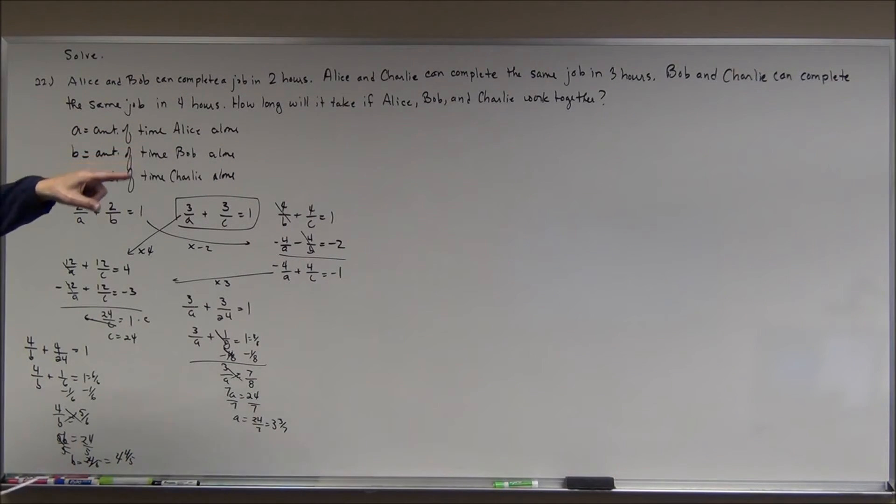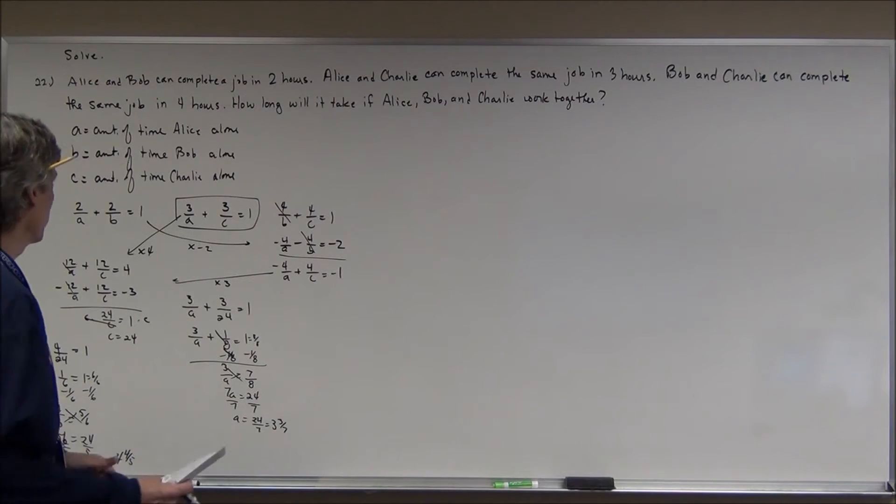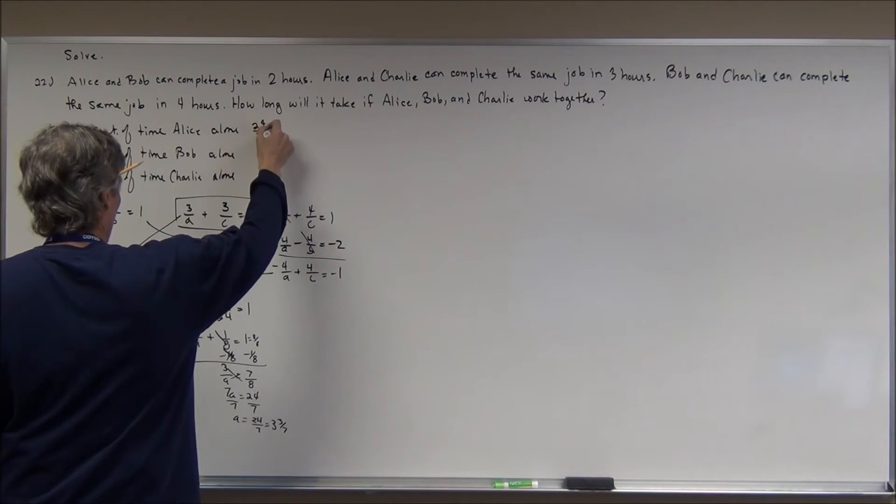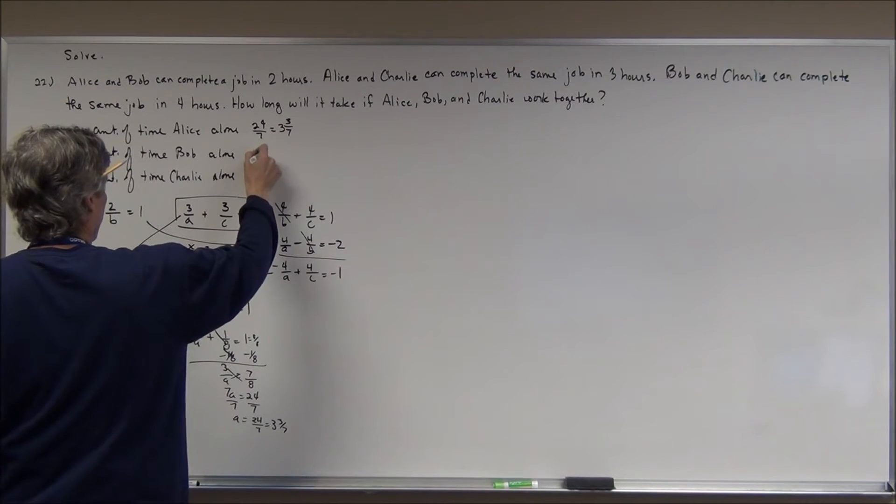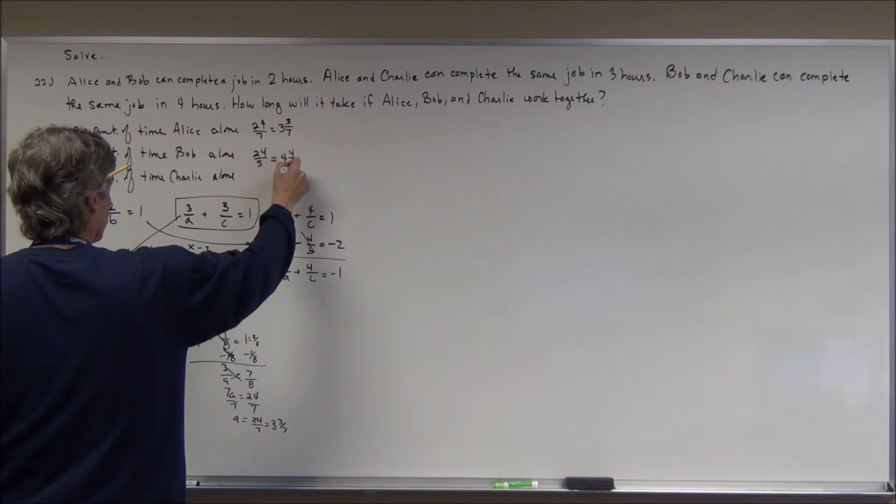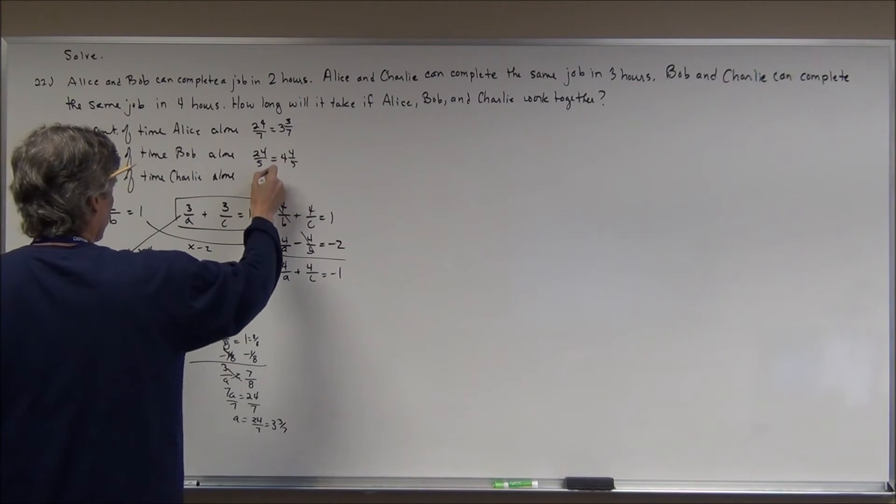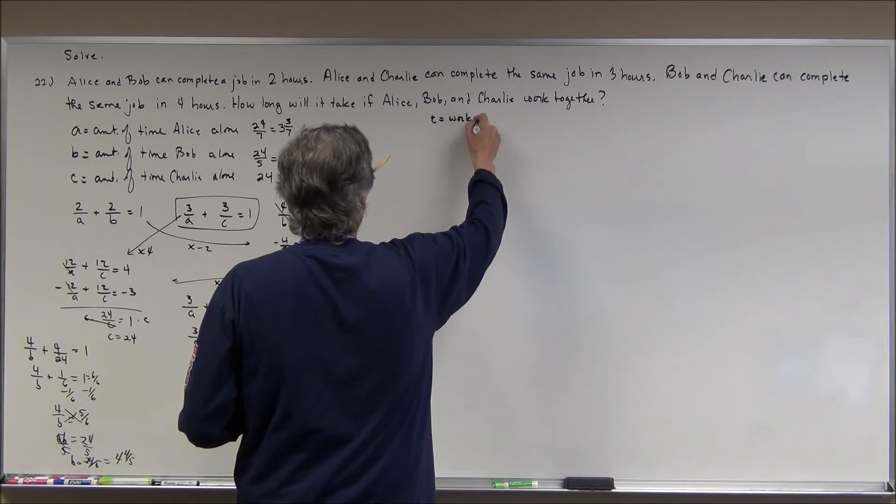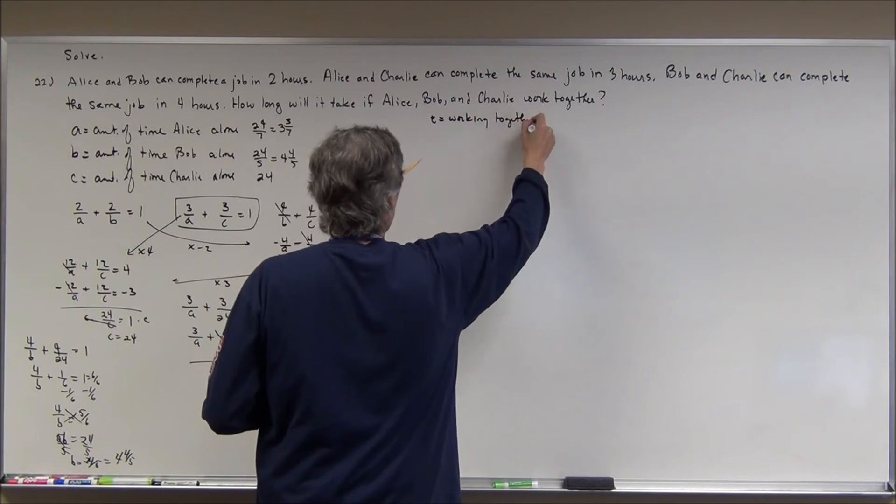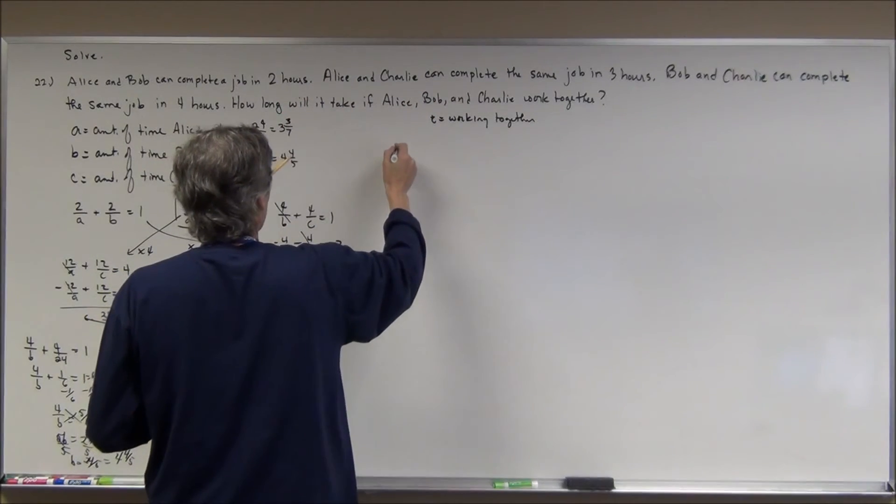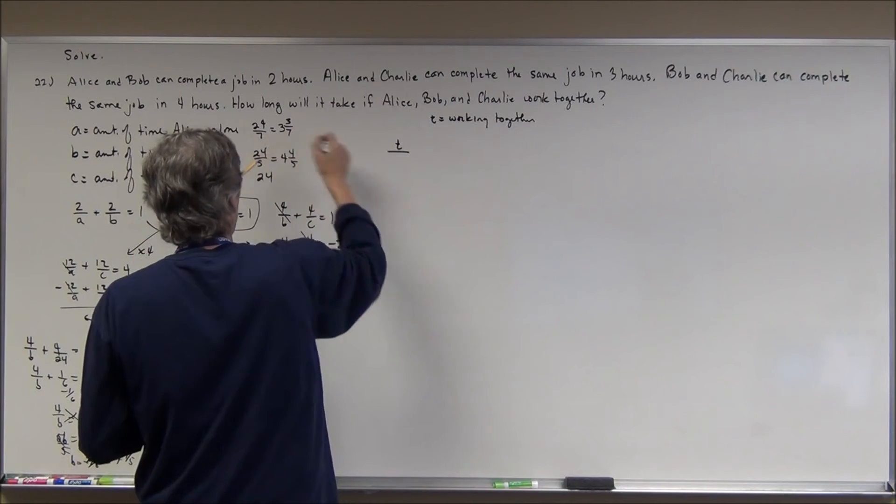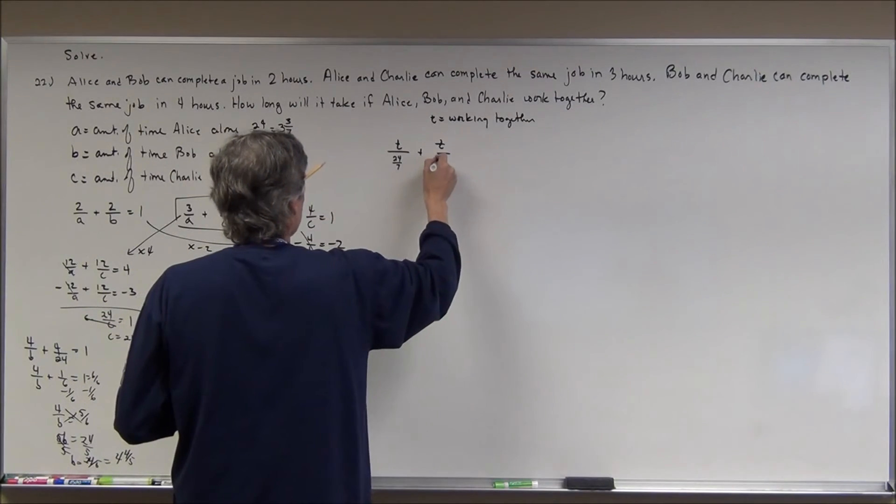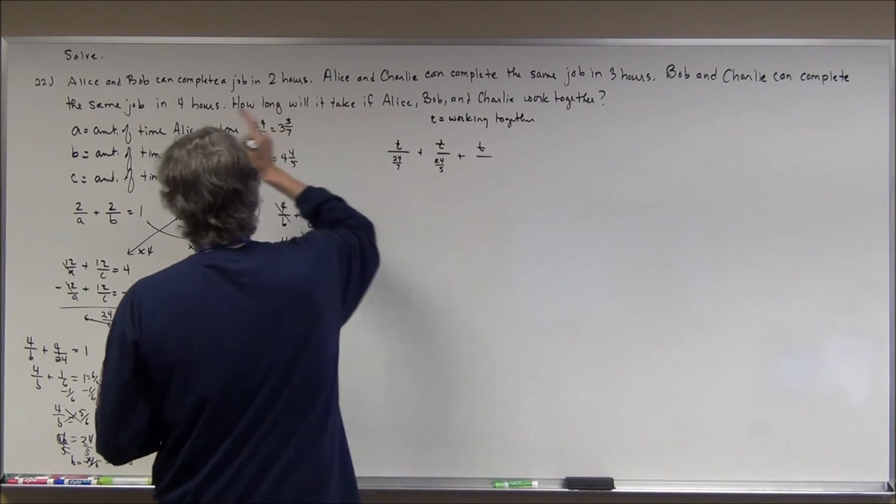All right. Now, how long would it take if the three of them worked together? So, if the three of them worked together, Alice alone 24 sevenths or 3 and 3 sevenths. Bob alone 24 fifths or 4 and 4 fifths. And then, Charlie is really the slow guy, 24. So, now, if T is the time working together for all three of them, I'm going to have three fractions. T over each one of the individual times. So, T over this, which is 24 sevenths, plus T over this, for Bob, that's 24 fifths, plus T over Charlie's time, which is 24, equals 1.